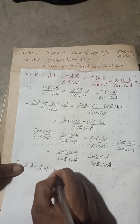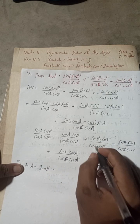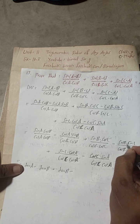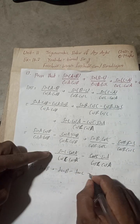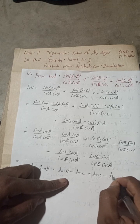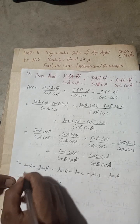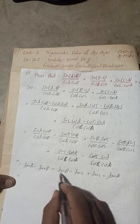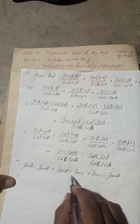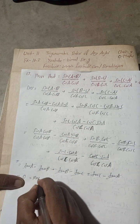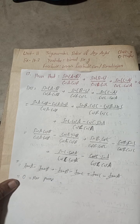Each fraction simplifies to a tangent: sin A / cos A = tan A, sin B / cos B = tan B, sin C / cos C = tan C. So we get: tan A − tan B + tan B − tan C + tan C − tan A. All tan terms cancel, giving 0, which equals RHS. Hence proved.